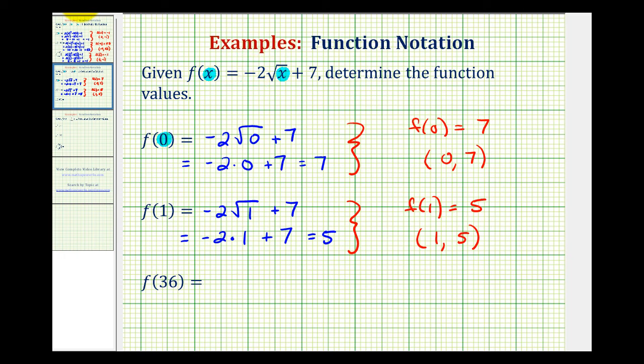And let's go ahead and try one more. Here, we have f of 36, so now we'll substitute 36 for x. So we'll have negative 2 times the square root of 36 plus 7. The square root of 36 is 6, so this would be negative 2 times 6 plus 7. Negative 2 times 6 is negative 12, negative 12 plus 7 is equal to negative 5.